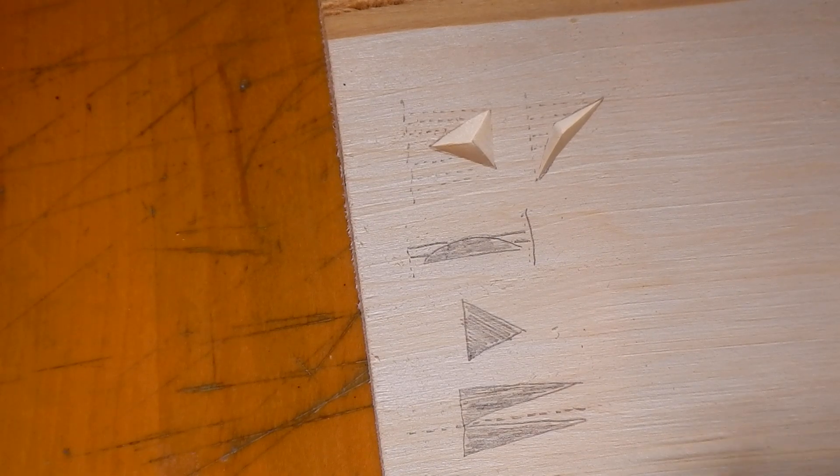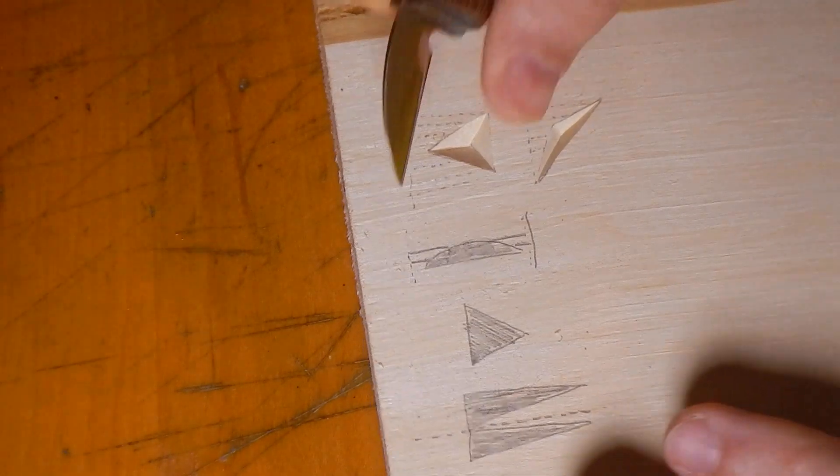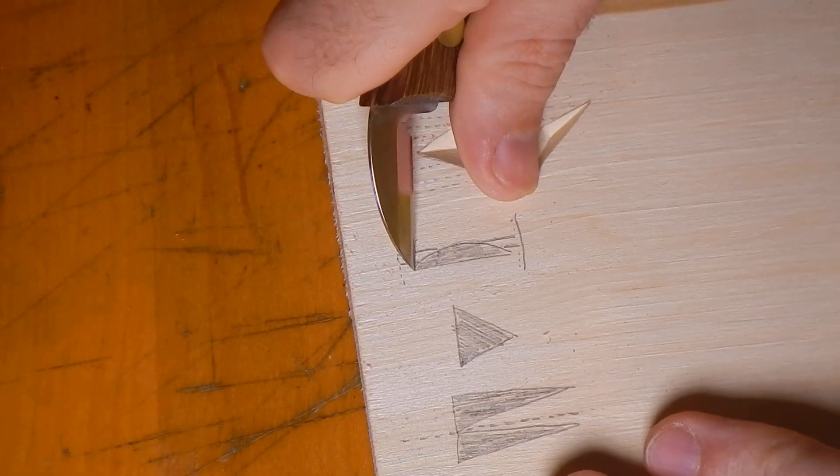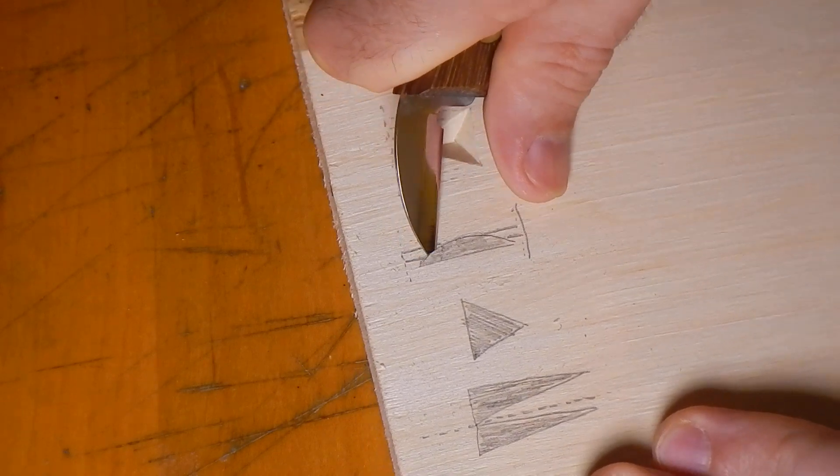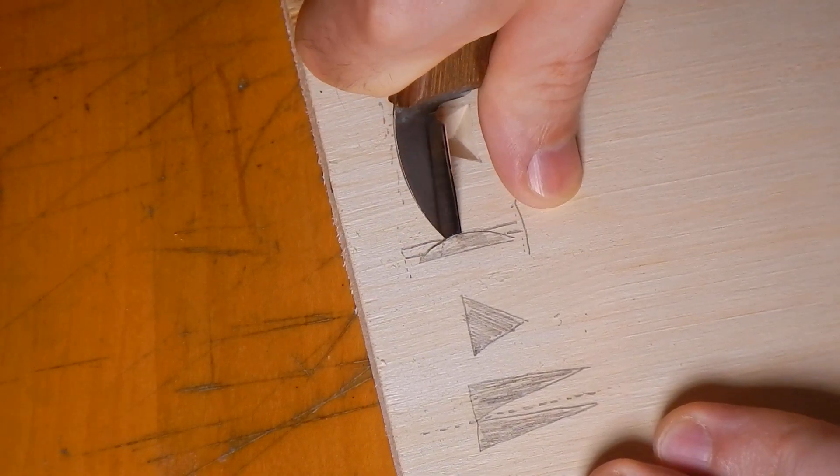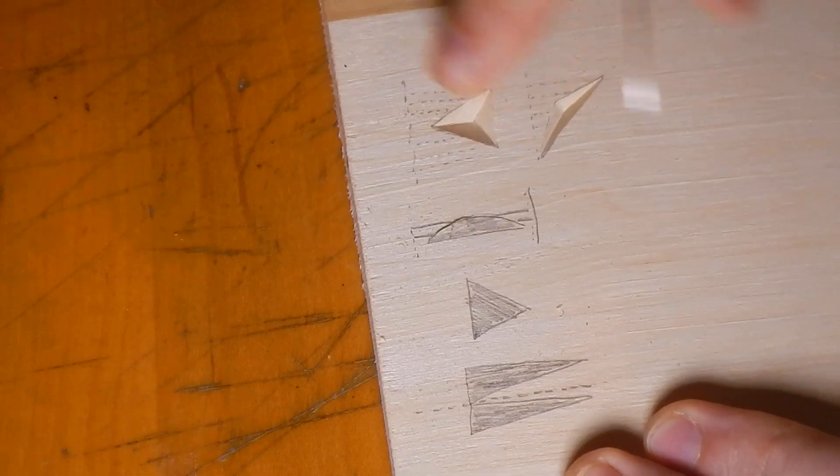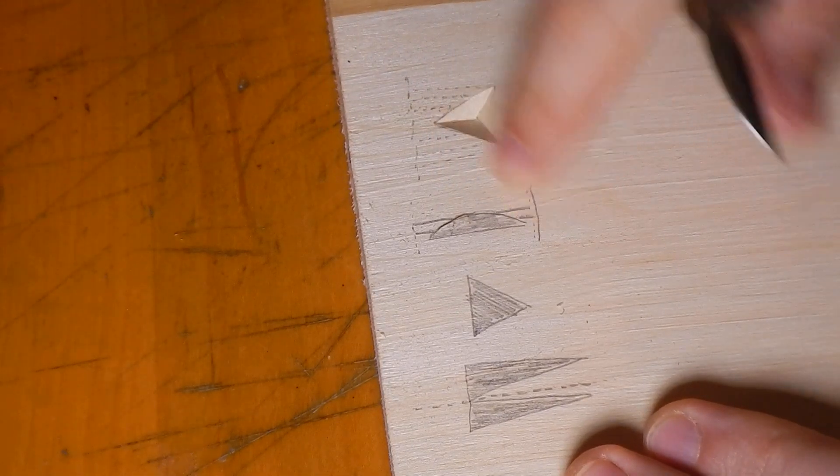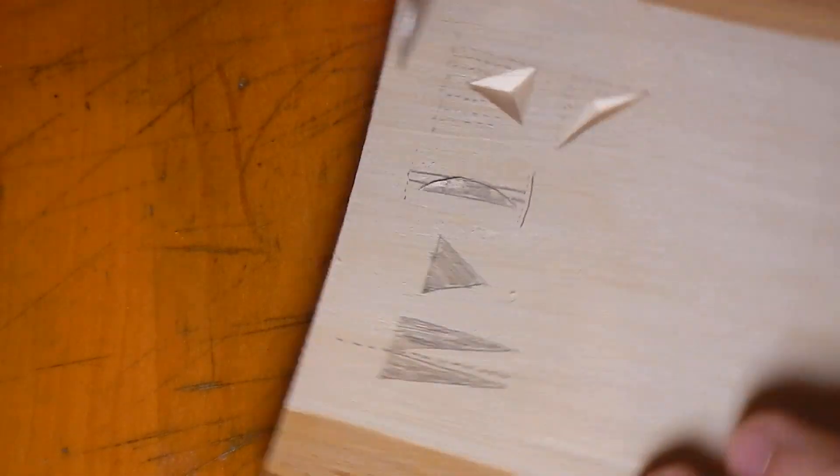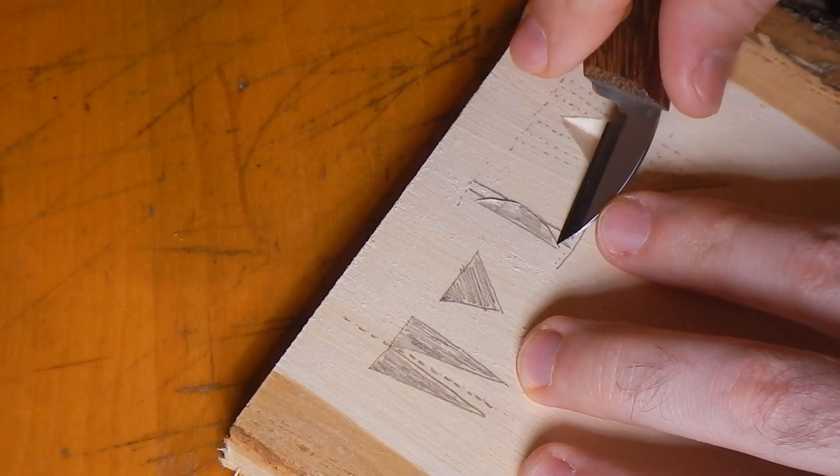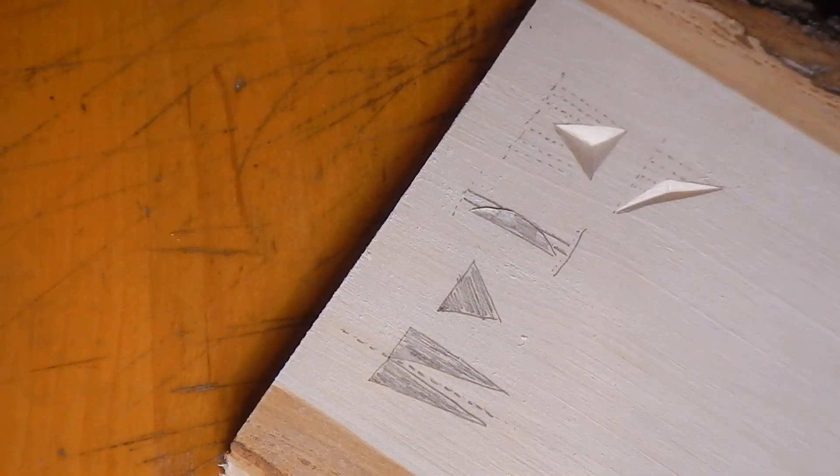So one common technique to deal with that is actually to make it in two cuts. To come here, stop, right where that transition happens, right where I would start carving against the grain, and then come back and carve backwards on that one.